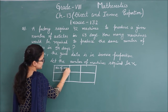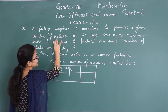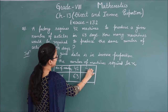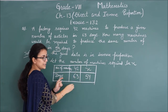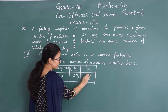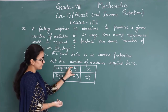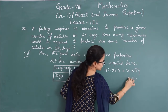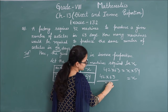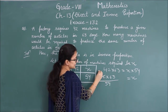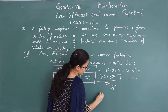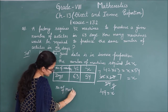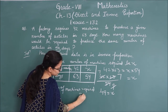Number of machines and second column is days. When machines = 42, days = 63. We let the number of machines be x, and days = 54. Since it is inverse proportion, multiplication stays the same: 42 × 63 = x × 54, so x = (42 × 63) / 54 = 49. Therefore, the number of machines required is equal to 49.